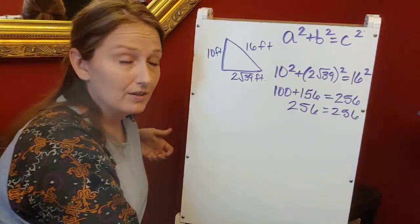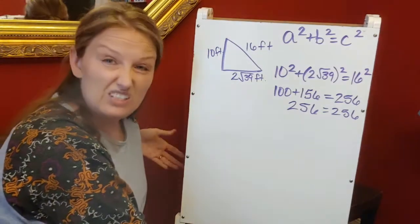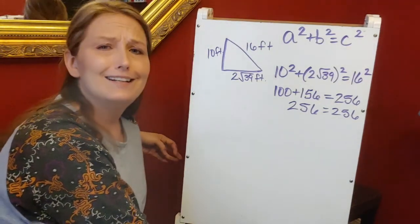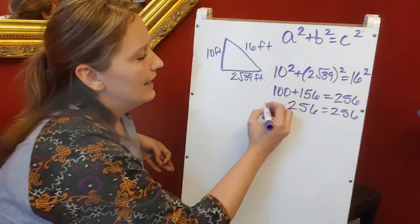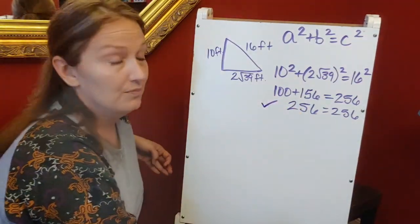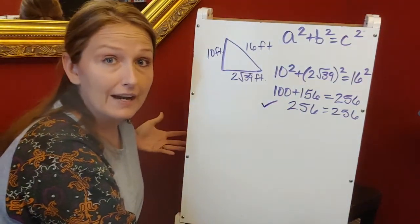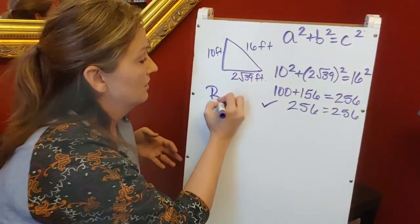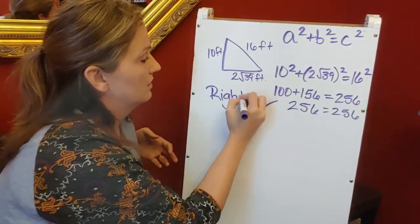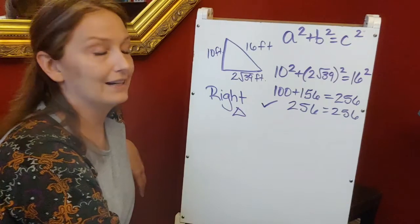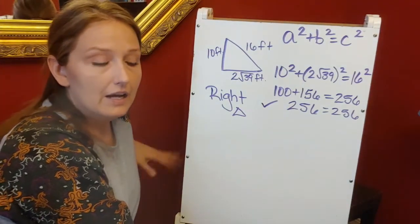the same on both sides of your equal sign, that's a true statement. 256 is in fact equal to 256. If that happens, you're good. This is a right triangle. The math checks out. I'm going to